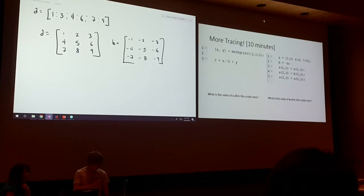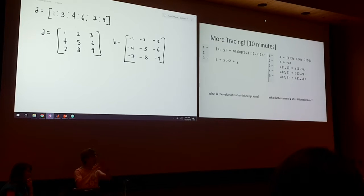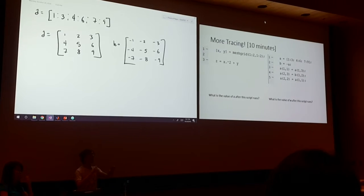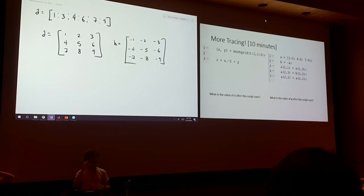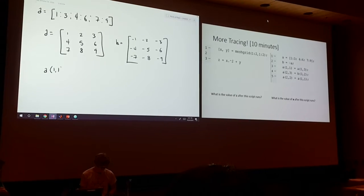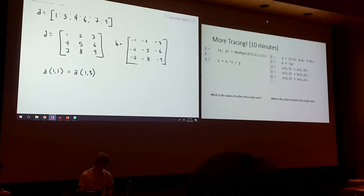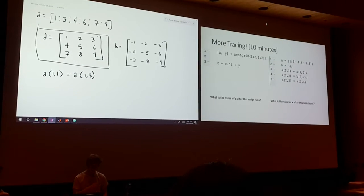And now what we're going to do is do some changing of A by indexing into certain locations in A and in B. So, the first thing that we do is say that A of 1, 1 is equal to A of 1, 3, okay? So, we're going to change, let's change this J right here.